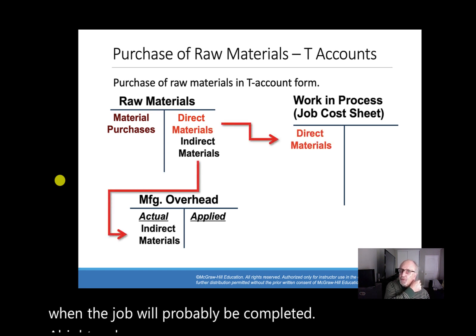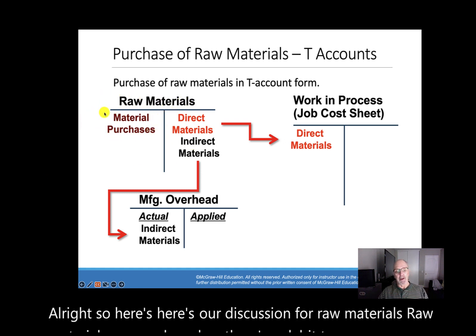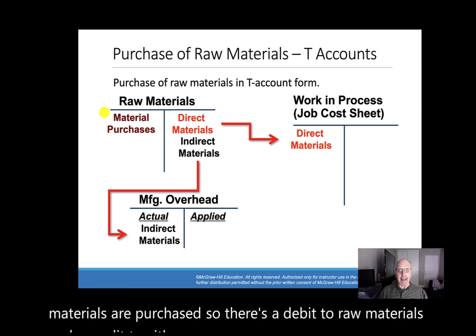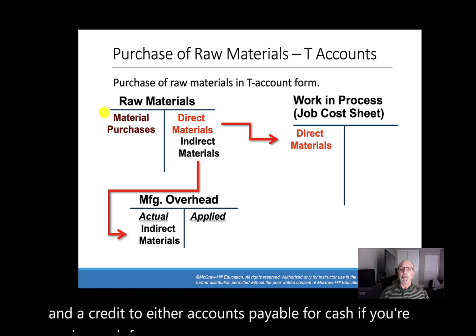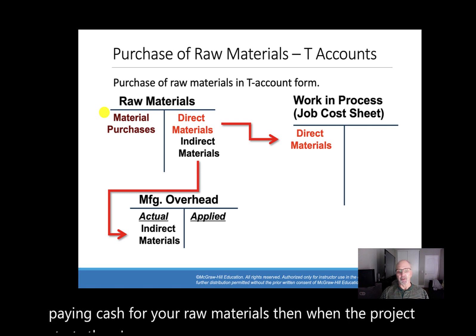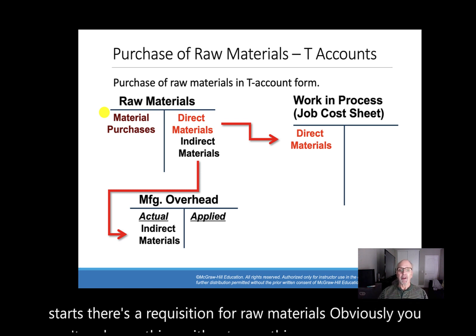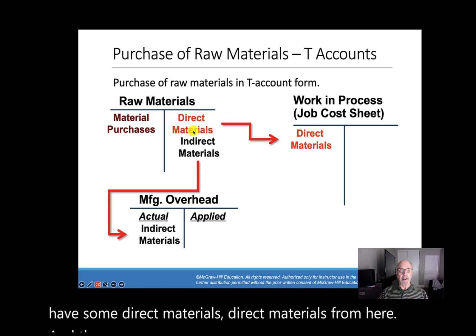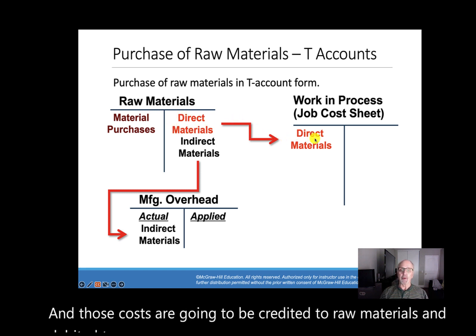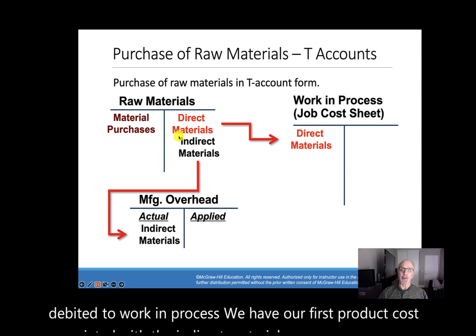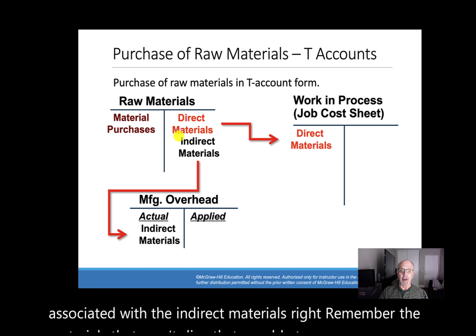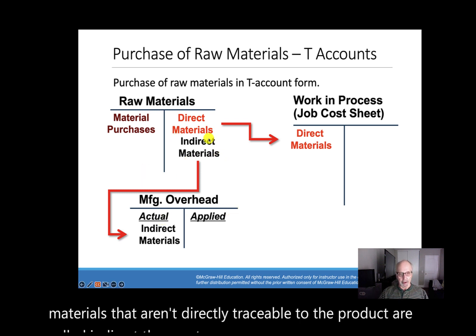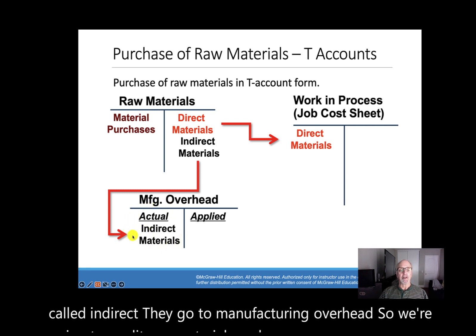For raw materials: when raw materials are purchased, we debit raw materials and credit accounts payable or cash. When the project starts and there's a requisition for raw materials, direct materials are credited to raw materials and debited to work in process. Indirect materials — those not directly traceable to the product — go to manufacturing overhead: we credit raw materials and debit manufacturing overhead.